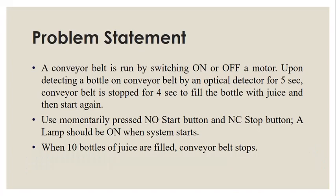The problem statement states that you have a conveyor belt which is run by switching on or off a motor. Upon detecting a bottle on the conveyor belt by an optical detector for five seconds, the conveyor belt must be stopped for four seconds to fill the bottle with some juice, and then it should start again. You have to use a momentarily pressed normally open start button and a momentarily pressed normally closed stop button. A lamp should be on whenever you start the system and remain on until the system is running. Additionally, if 10 bottles of juice are filled, the conveyor belt must stop as well.